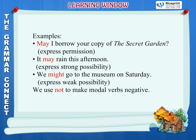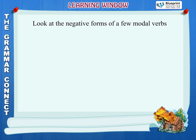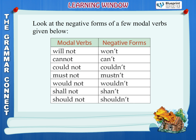We use not to make modal verbs negative. Look at the negative forms of a few modal verbs given below. Will not — won't. Cannot — can't. Could not — couldn't. Must not — mustn't. Would not — wouldn't. Shall not — shan't. Should not — shouldn't.